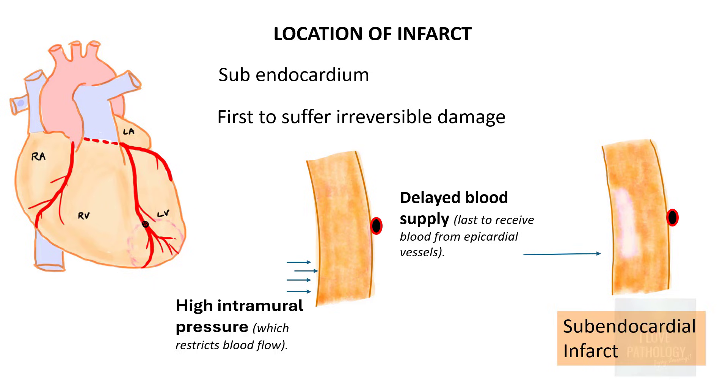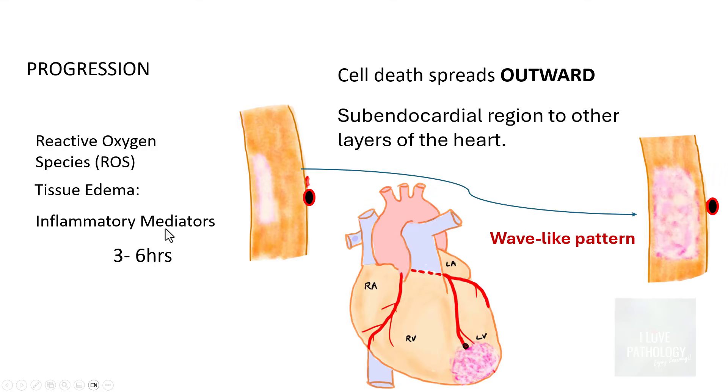So if there is prolonged ischemia, what really happens is there is infarct of the subendocardial region. So that's the subendocardial infarct. If there is no intervention at this stage, there is progression of infarct, and that progression is because of the presence of reactive oxygen species, could be because of tissue edema and lots of inflammatory mediators which usually occurs in around 3 to 6 hours where the subendocardial infarct gets converted to a full thickness infarct.